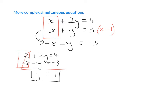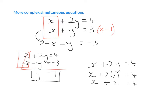I still need to work out the value of x, so I'm going to rewrite the first equation and substitute in y equals one. That gives me x plus two equals four. I minus two from both sides, therefore x equals two. So our answer is x equals two, y equals one, and if this were drawn on a graph they would intersect at the point (2, 1).